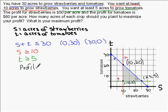I do know that I will make 50 times the number of acres of strawberries plus 60 times the number of acres of tomatoes. We were given that information right here.